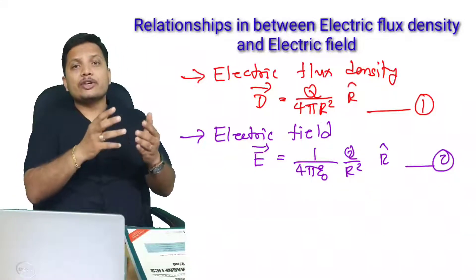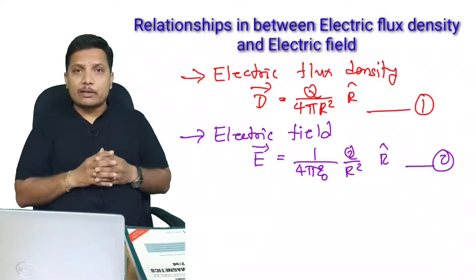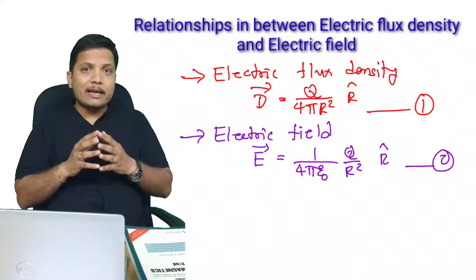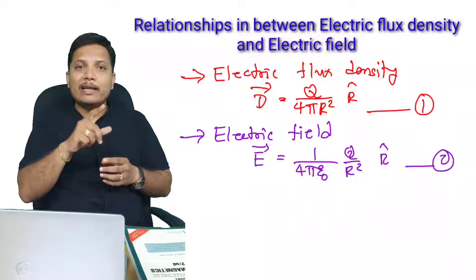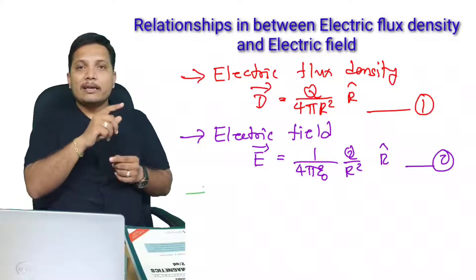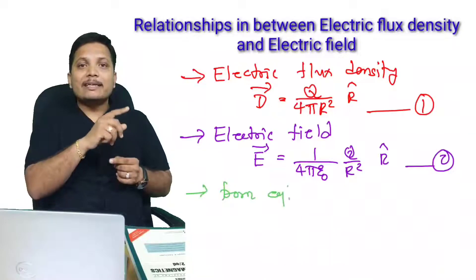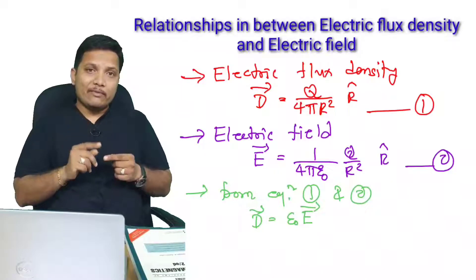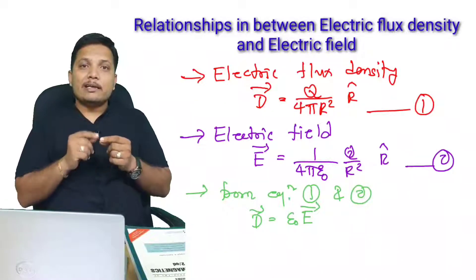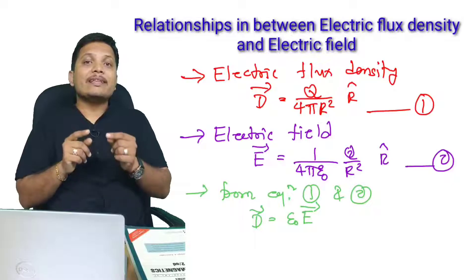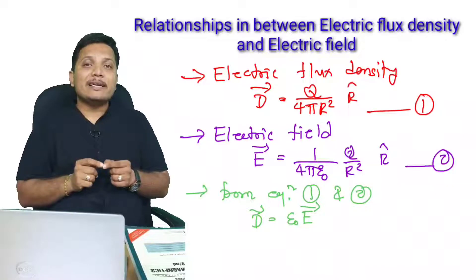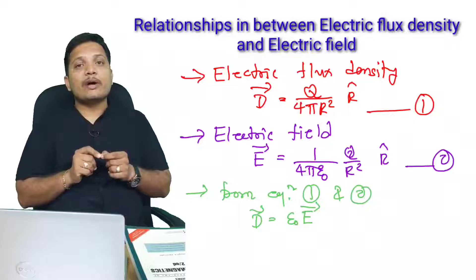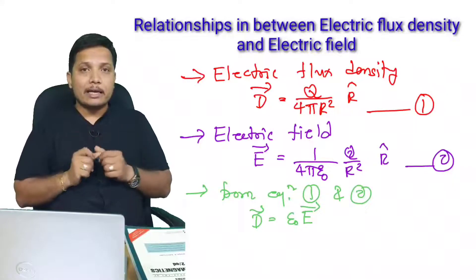Taking the ratio of equation 1 and equation 2, we find that the relation between electric flux density and electric field is: vector D equals ε₀ times vector E.